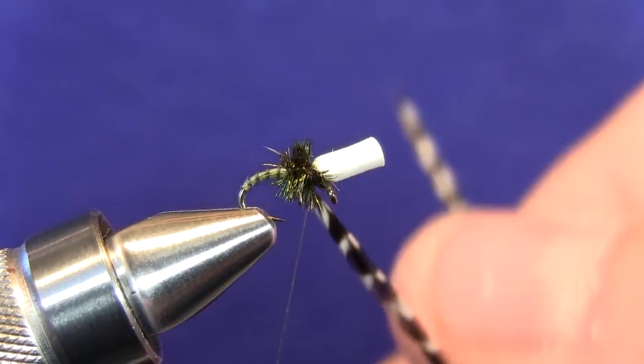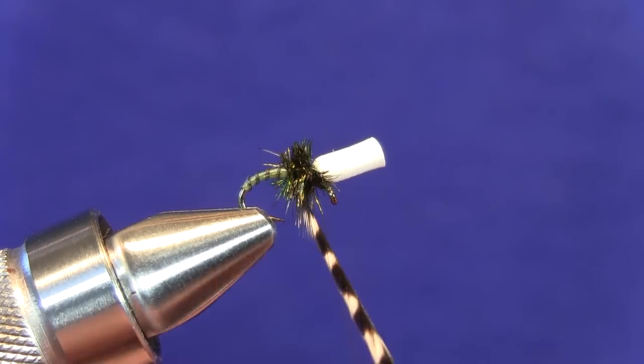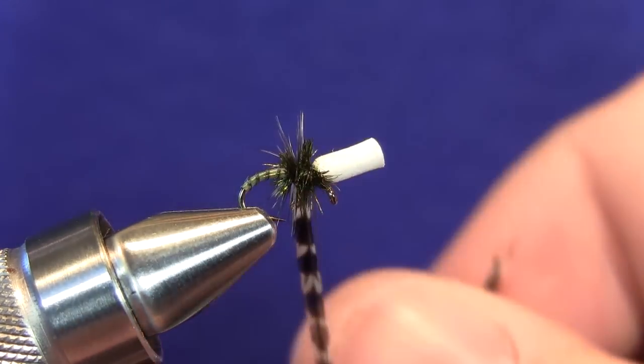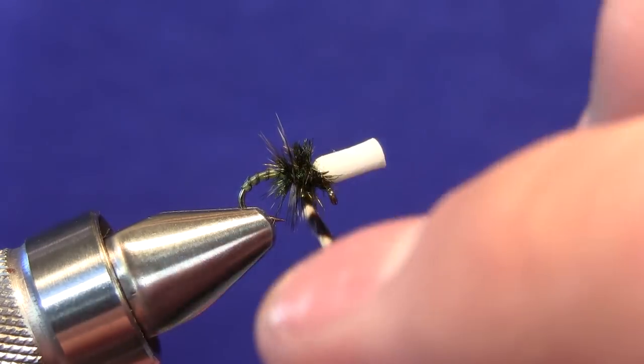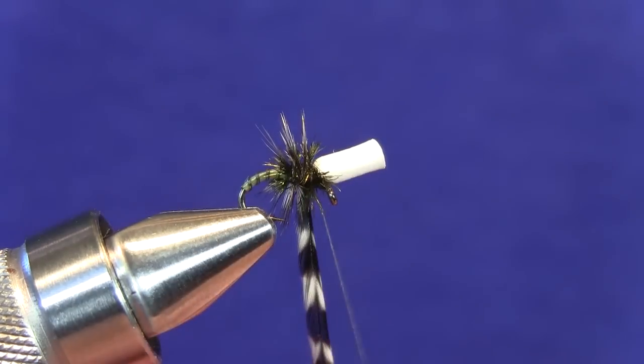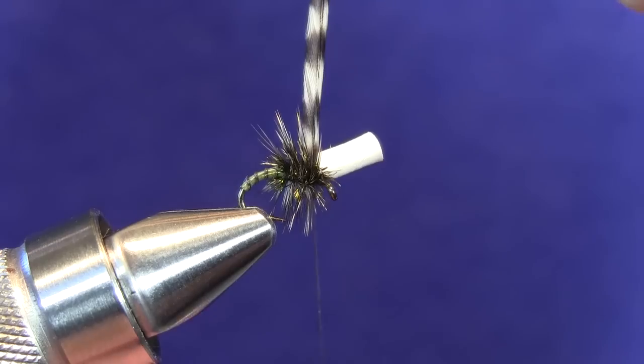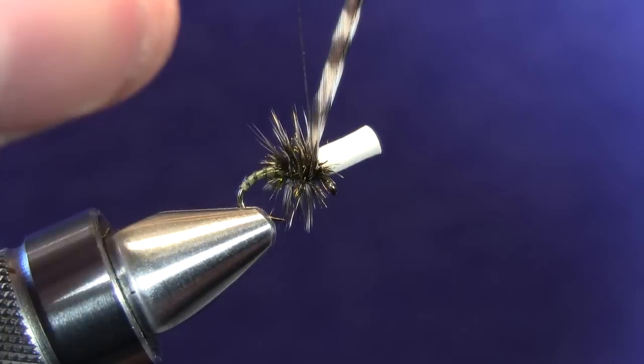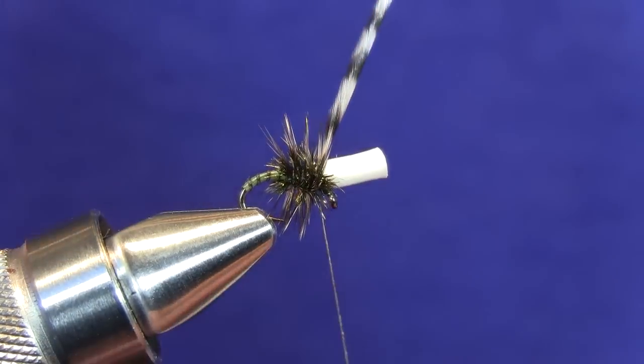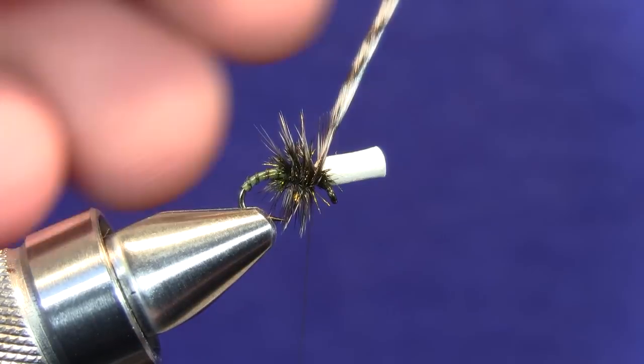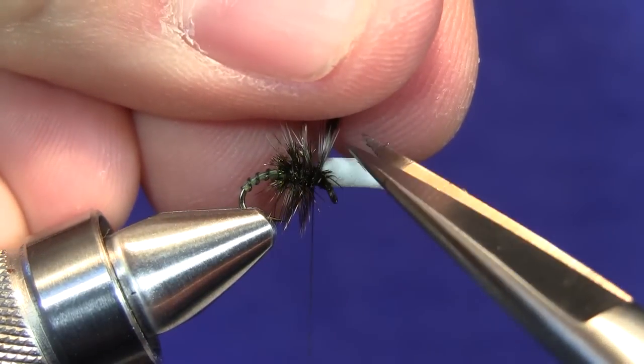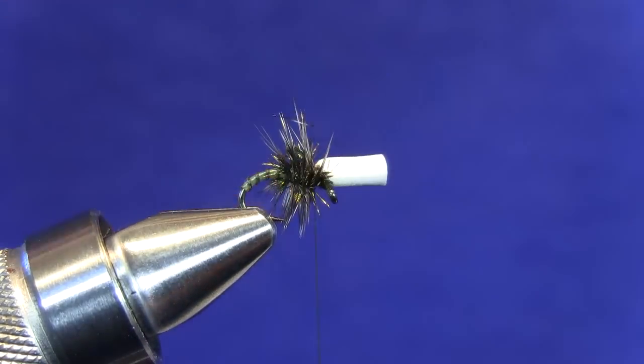At this point we're just going to grab that grizzly hackle and we're going to begin making our forward wraps through the peacock. As you can see here, there's kind of natural grooves so your hackle is going to kind of grab certain sections, and right here at about two and a half wraps, kind of even with that parachute post, we're going to make a few securing wraps just to bind it down. Then with our scissor tips we're just going to snip out the butt section as closely as possible.